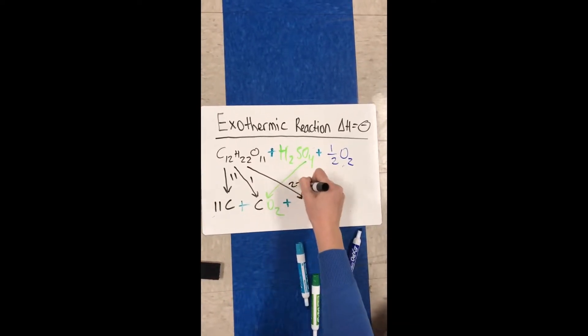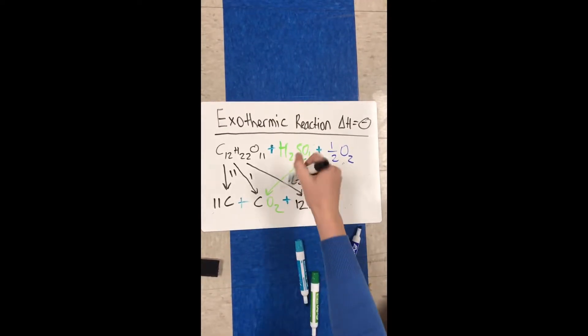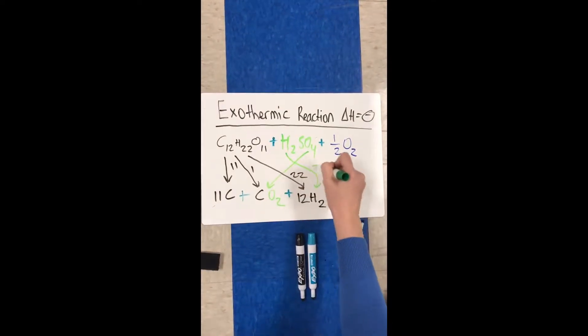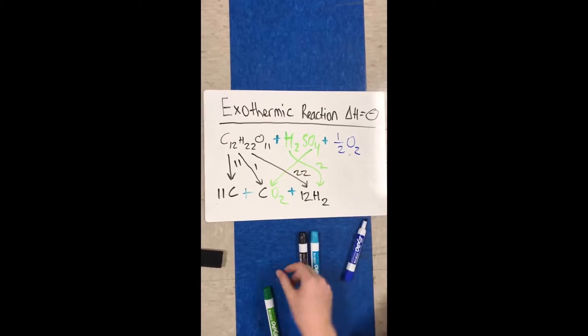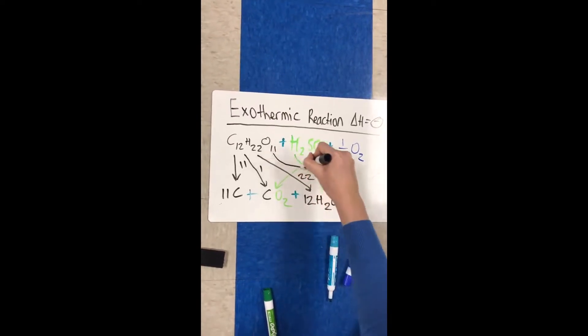The sugar will donate 22 of its hydrogen atoms and 11 of its oxygen atoms, while the sulfuric acid will donate 2 of its hydrogen atoms, and the oxygen will donate 1 atom of oxygen. This will create 12 molecules of water.